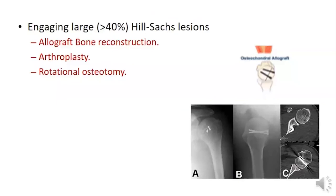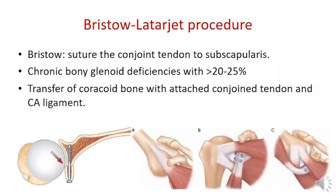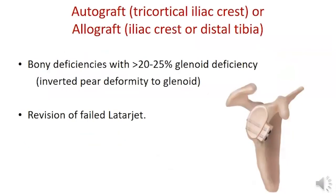Hill-Sachs lesions larger than 40% are treated with osteochondral allograft, arthroplasty, or rotational osteotomy. For chronic bony glenoid deficiency larger than 20–25%, the Latarjet procedure is indicated — transferring the coracoid and fixing it to the antero-inferior glenoid with two screws to increase the articular arc, with the conjoined tendon acting as a dynamic sling. An iliac crest autograft or distal tibial allograft is an alternative, also used in cases of failed Latarjet.